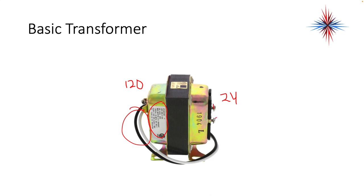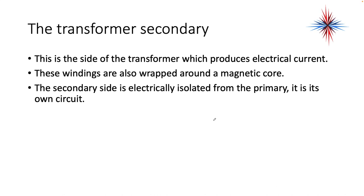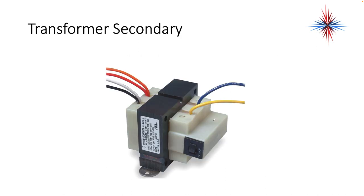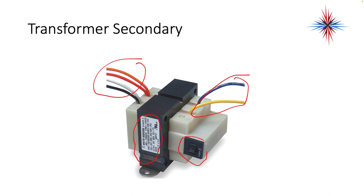There are two screws here that are my secondary side. The transformer secondary is the side of the transformer which produces electrical current. These windings are also wrapped around the same magnetic core. However, the secondary side is electrically isolated from the primary — it's its own circuit. I should never be able to take a resistance reading between the primary and the secondary side. In this case, the secondary is the yellow and the blue wire coming off the transformer. This transformer also has a breaker on it at 3.7 amps, so if my secondary gets a short, the breaker will pop and it won't blow the transformer.